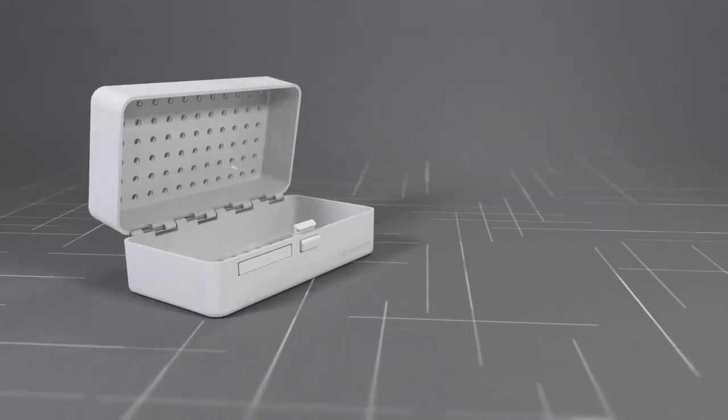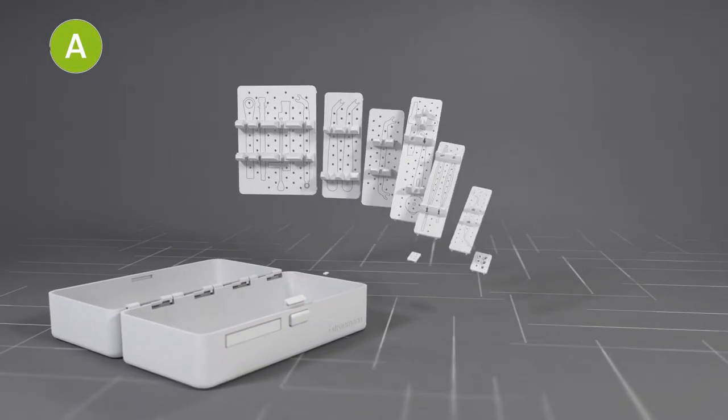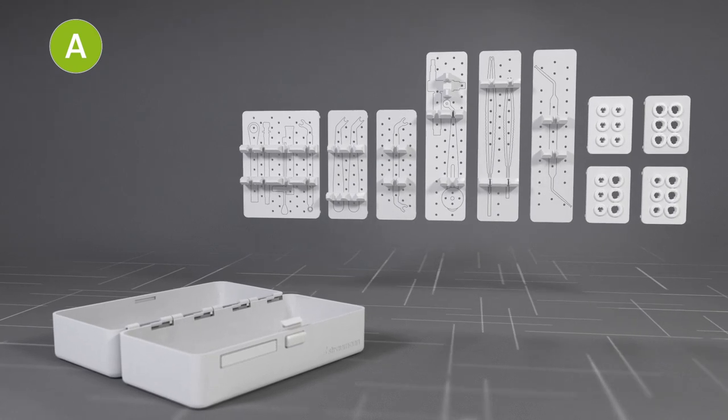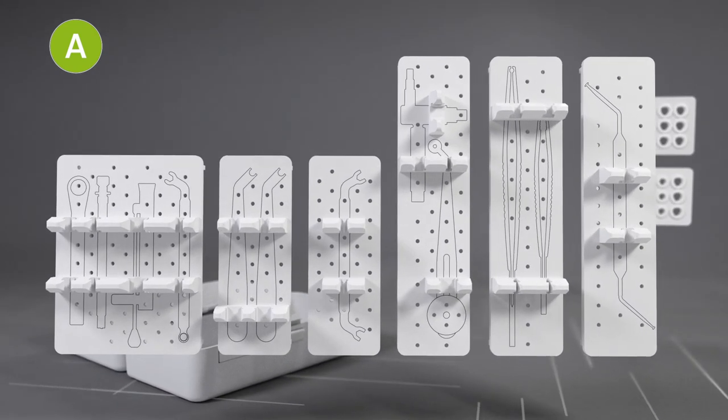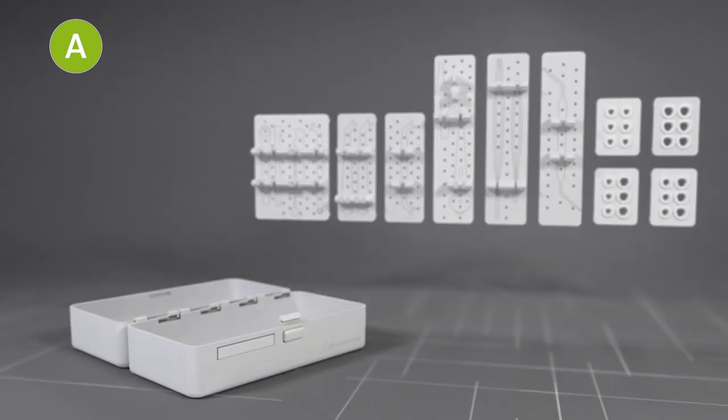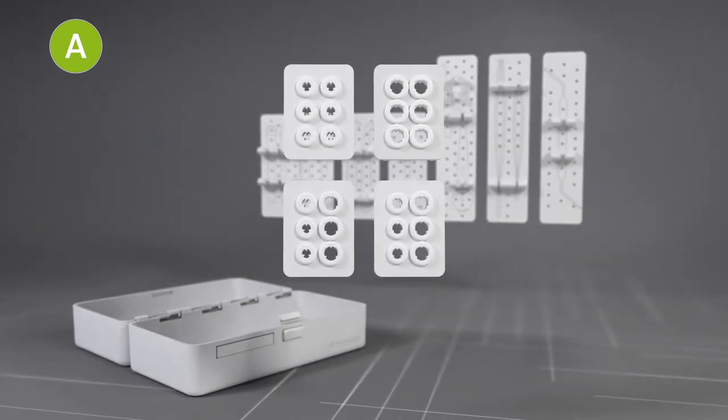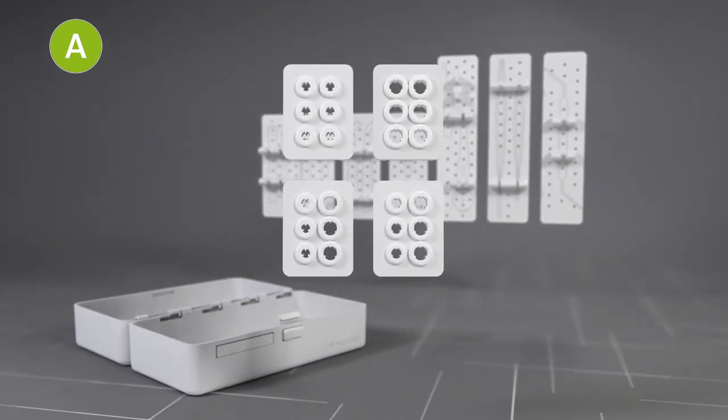Let's have a closer look at the modules, starting with the A module. The A module has trays with dedicated places for the long instruments and trays with silicone grommets in different sizes and combinations for short instruments.